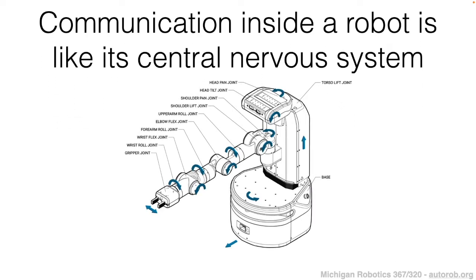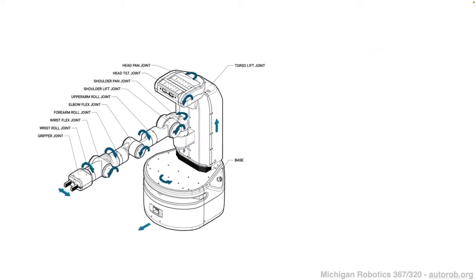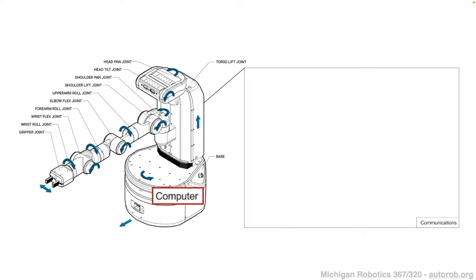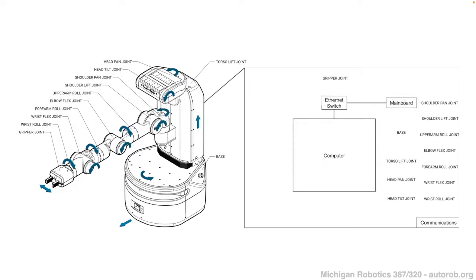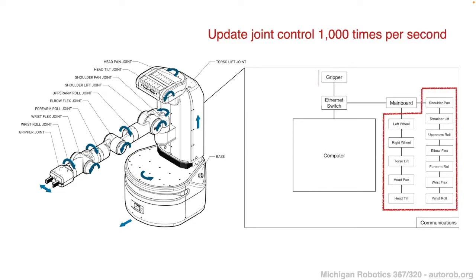For example, looking at the Fetch robot and its control pipeline: at the center is a computer on board the robot, which is responsible for this control pipeline. It communicates with a set of joints, and for each joint there's a separate controller that is updated throughout time and told how it should be applied to the robotic actuators — the actual motors. These controllers update the state of control for each joint at very high frequency in order to keep up with the environment.